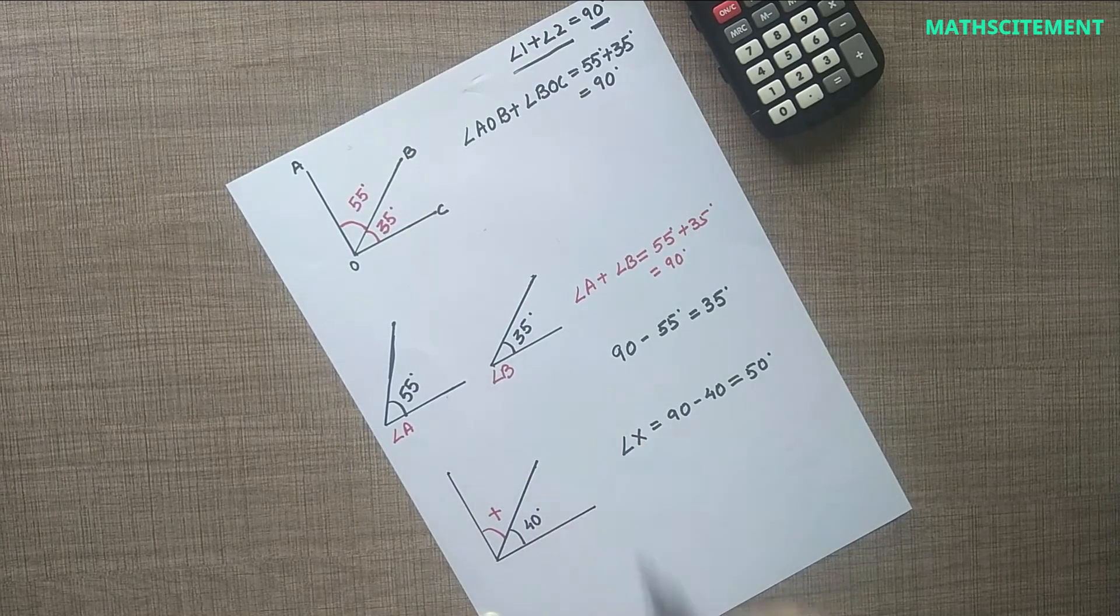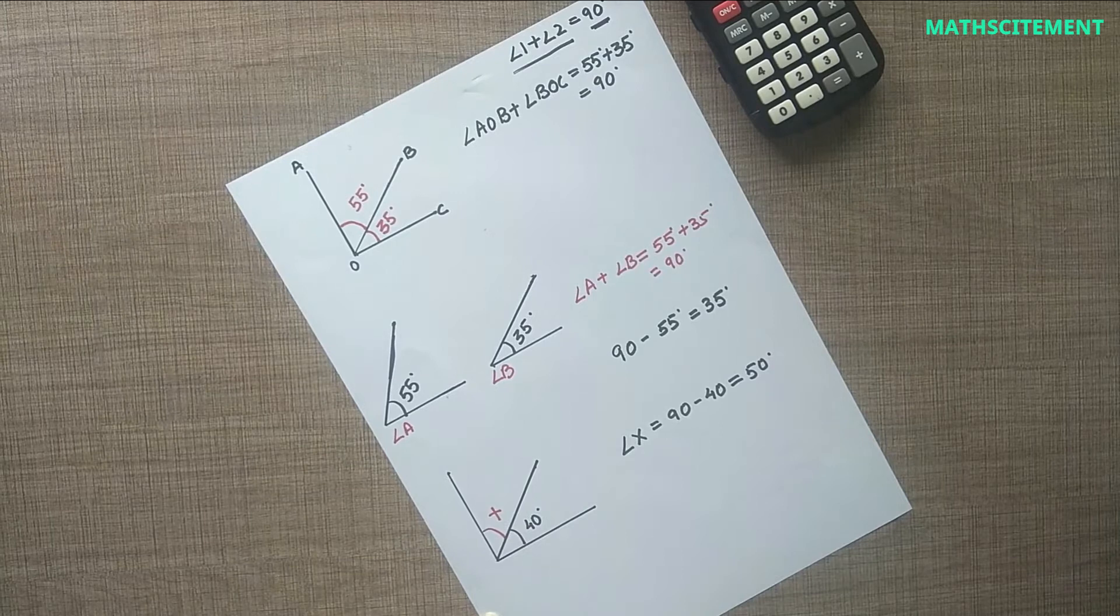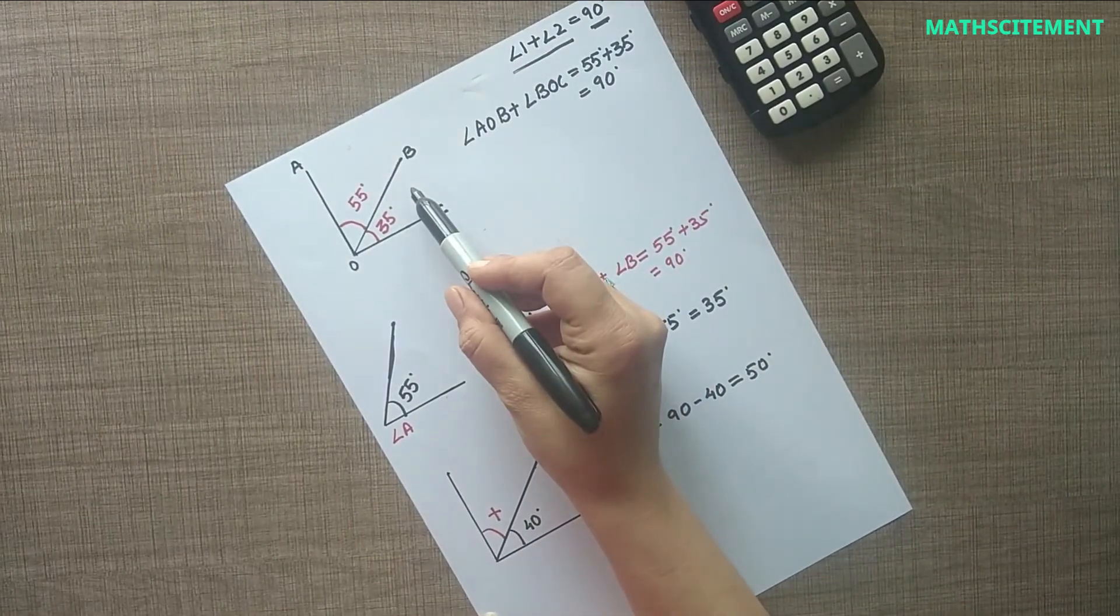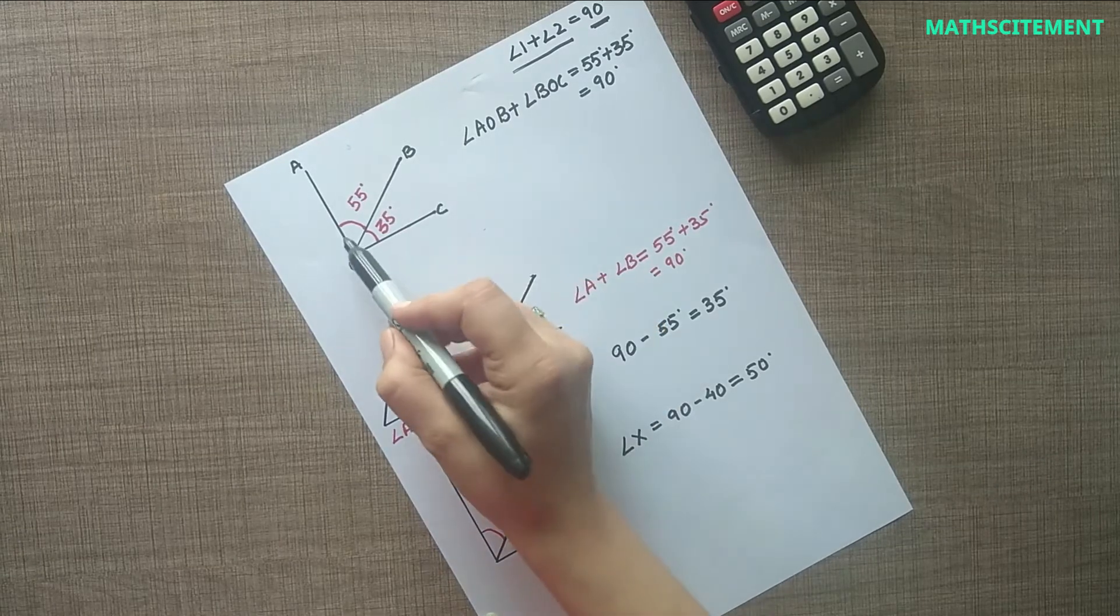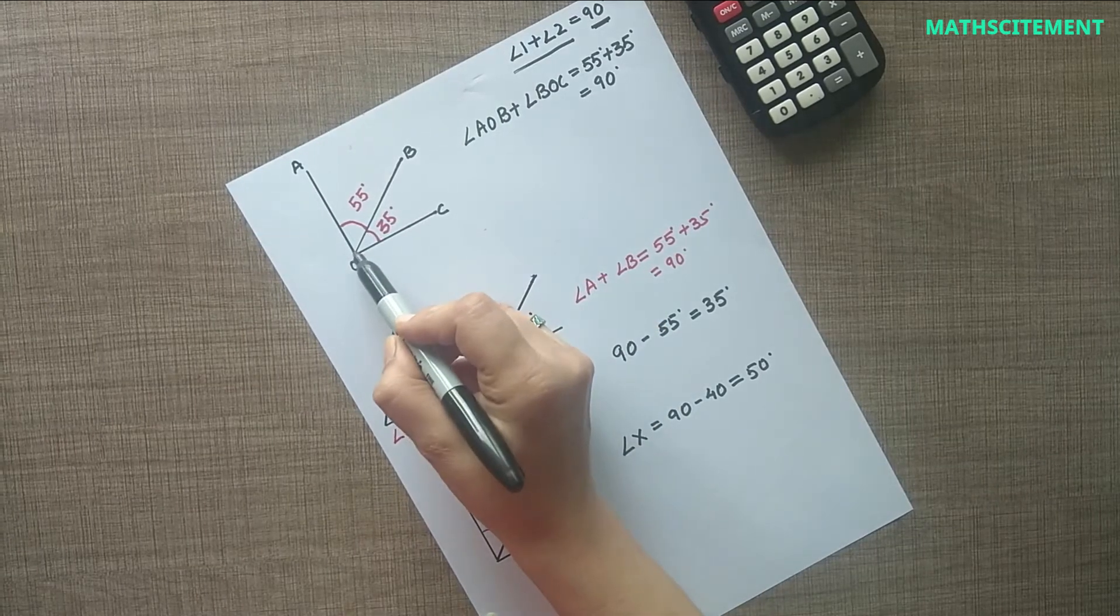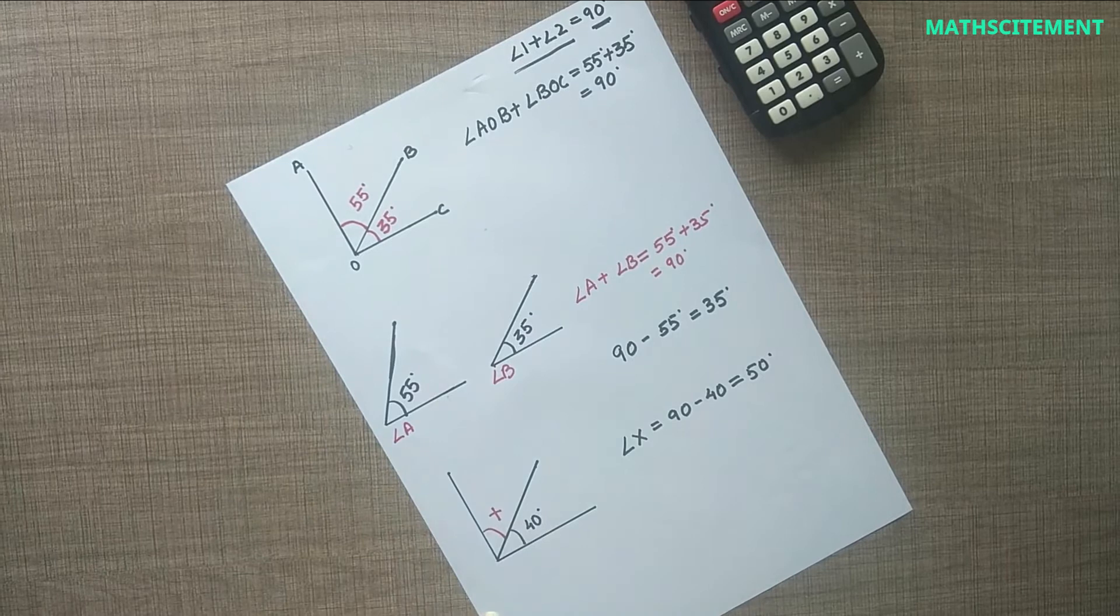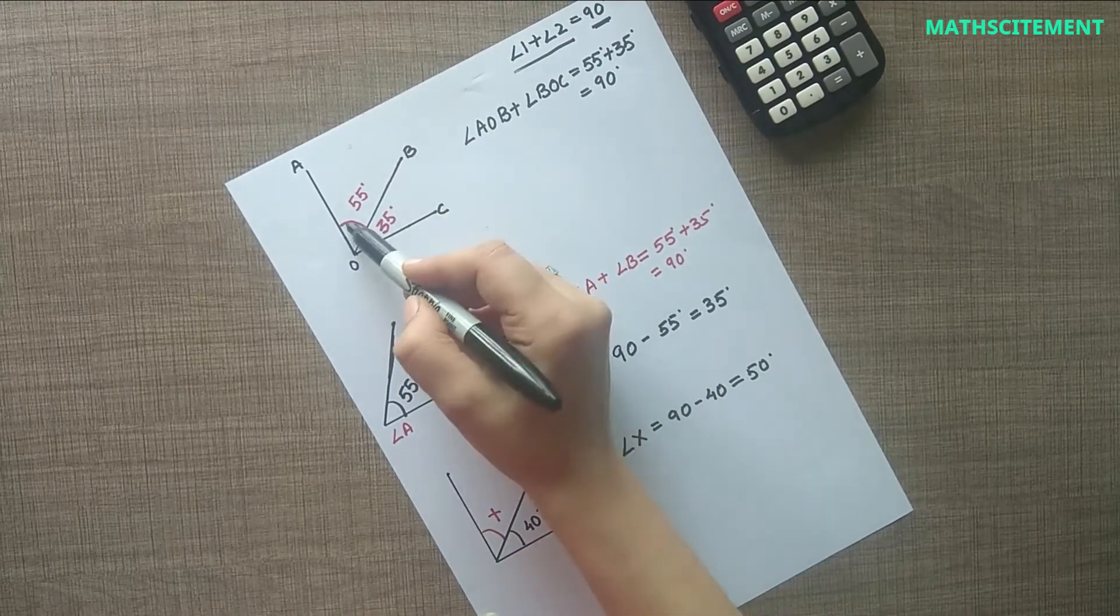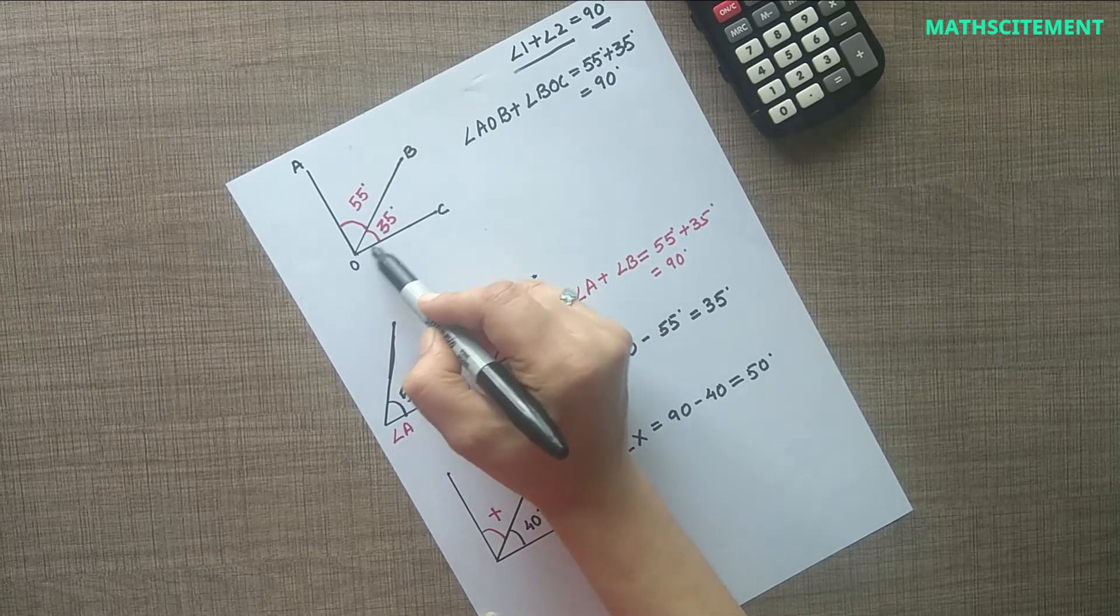For example, here is a pair of complementary angles having the same vertex. The measurement of angle AOB plus the measurement of angle BOC is 90 degrees.